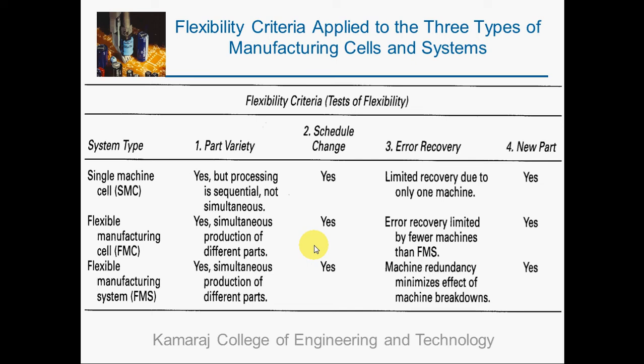Comparing the three types against the flexibility tests: for the part variety test, the single machine cell can process different part styles but only sequentially since there is only one machine. In an FMC, simultaneous production of different part configurations is possible. In an FMS, with its large number of machines, part variety can also be handled simultaneously.